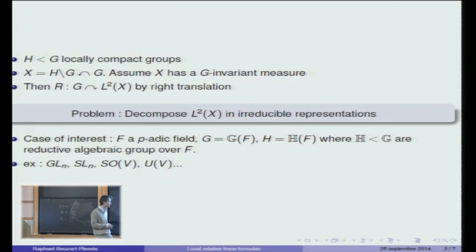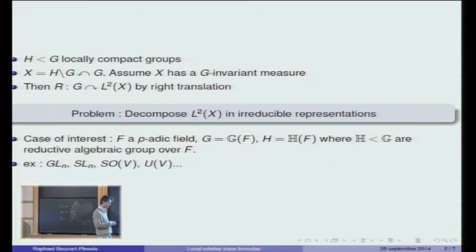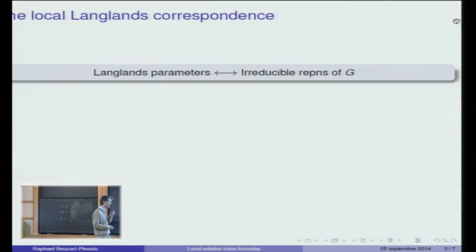If you want to address the above question in this particular case, you need at least a way to talk about the irreducible representations of G — you need to know what they are, or something to give them names, or in other words, you need a parametrization of them. Such a parametrization is provided by the local Langlands correspondence, which roughly goes as follows: there is a correspondence between the set of irreducible representations of G and some parameters called the Langlands parameters.